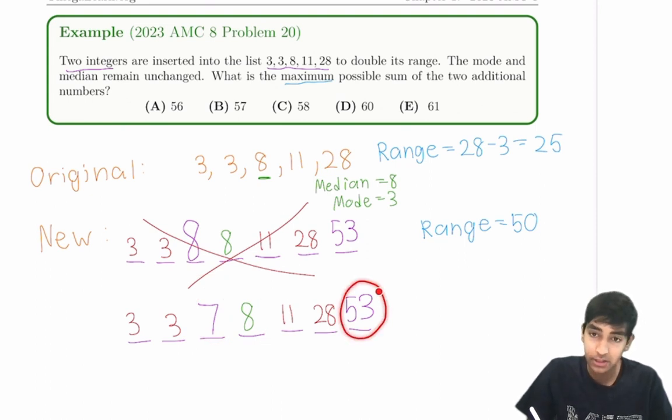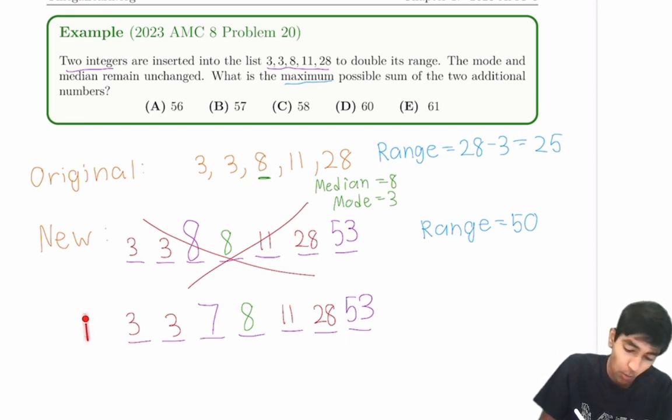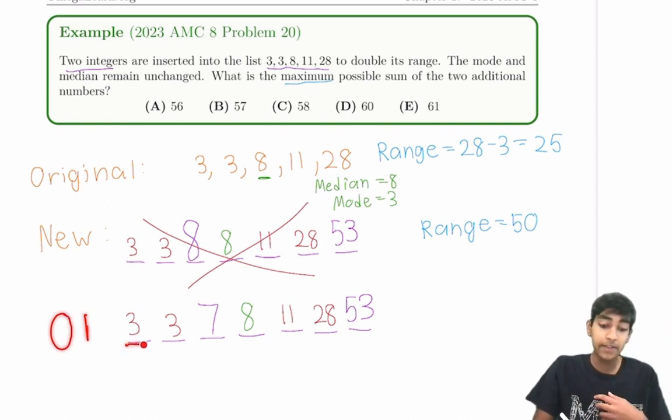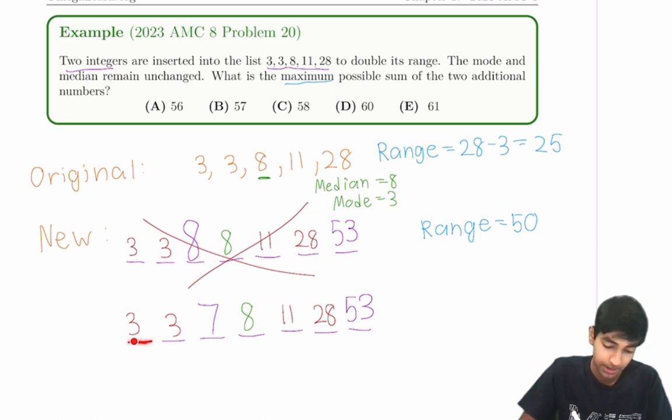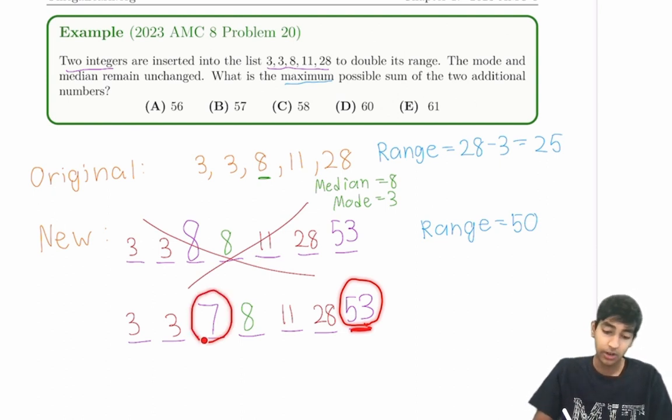Can anything larger than 53 be inserted on the right side? Well, notice that the minimum number is at most 3. If we inserted numbers, let's say 1 or 0 or something, then the minimum could be even less than 3, but at the very maximum, the minimum is 3. The highest possible value for minimum is 3. And that means, because the range is 50, the highest possible value for the maximum number is 53. So nothing larger than 53 can go here, and we already found nothing larger than 7 can go here, because if 8 goes here, then it's not allowed by this condition.